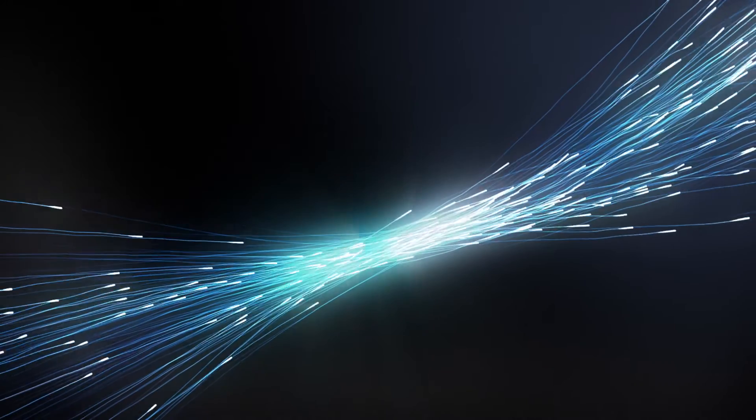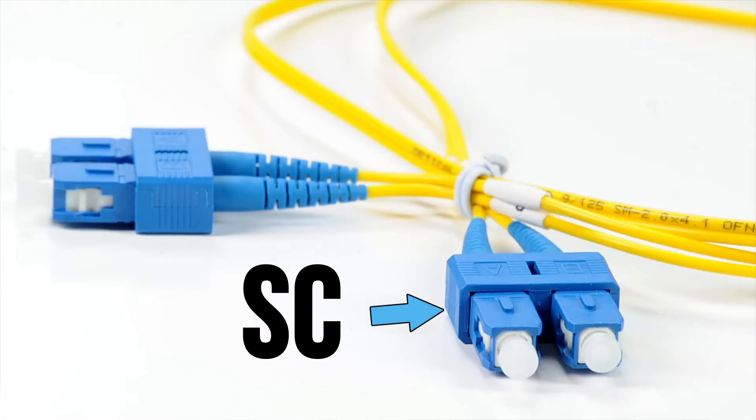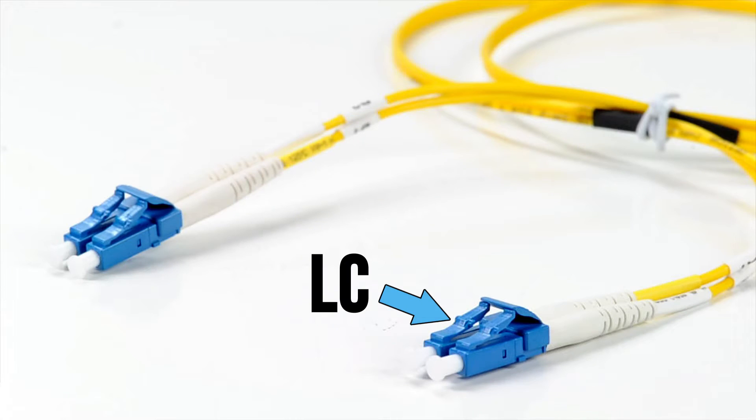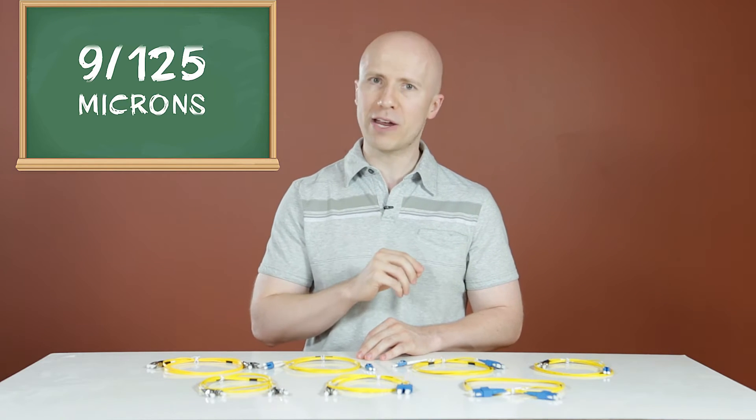Single-mode fiber cables come in a variety of connector types: SC, FC, ST, LC, and MTRJ. Single-mode fiber cables have a diameter of 9/125 microns and can transmit data up to 50 times farther than multi-mode fiber cables.